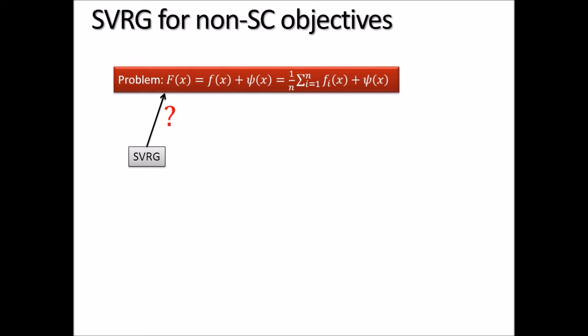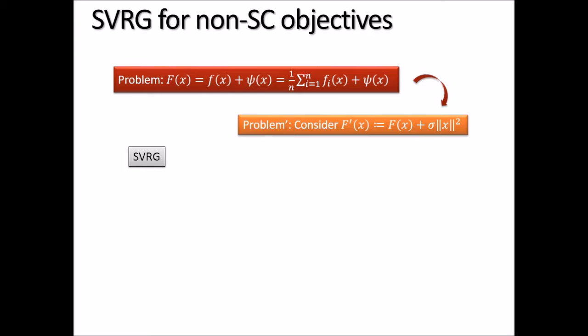There are two known approaches. Approach one: perturb the function by introducing an L2 regularizer, making the function strongly convex, then use SVRG to solve it, giving an indirect solution. If you set the parameters correctly, you get a certain theoretical running time. Unfortunately, this indirect method is not very pleasant in practice: it requires extra parameter tuning and, more importantly, because you are changing the problem, L1-regularized problems have sparse solutions but the perturbed problem's solution is not necessarily sparse.